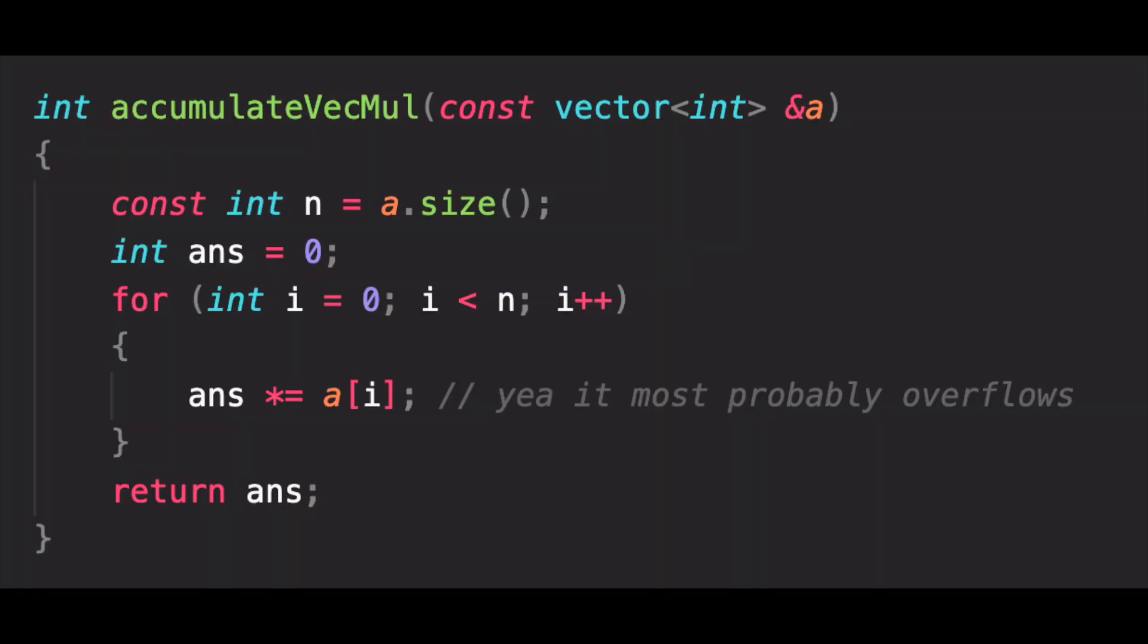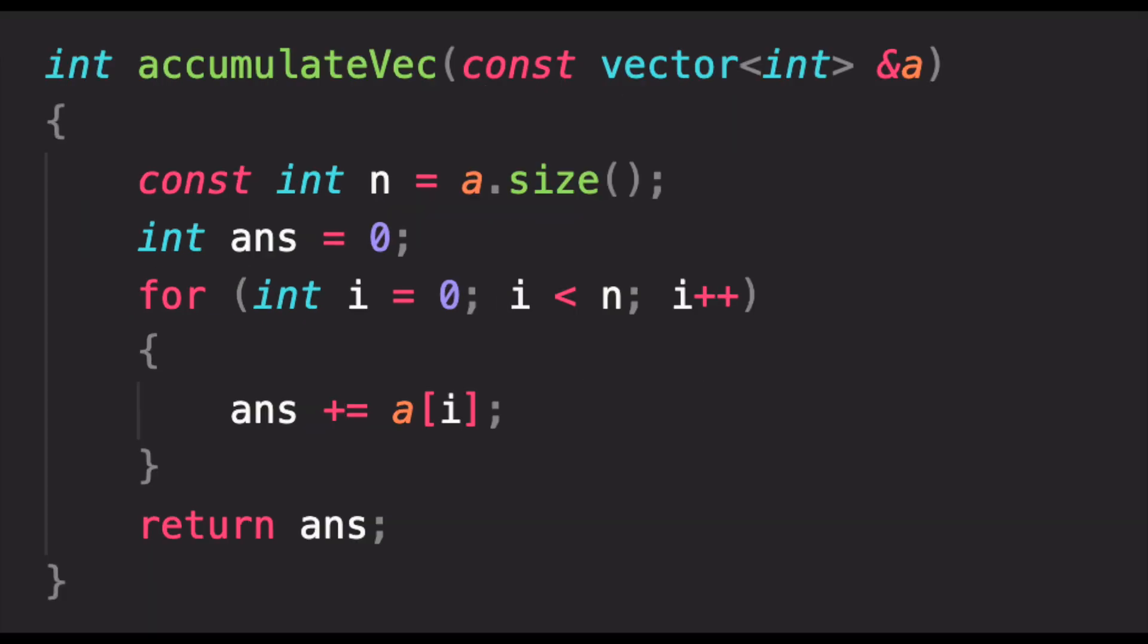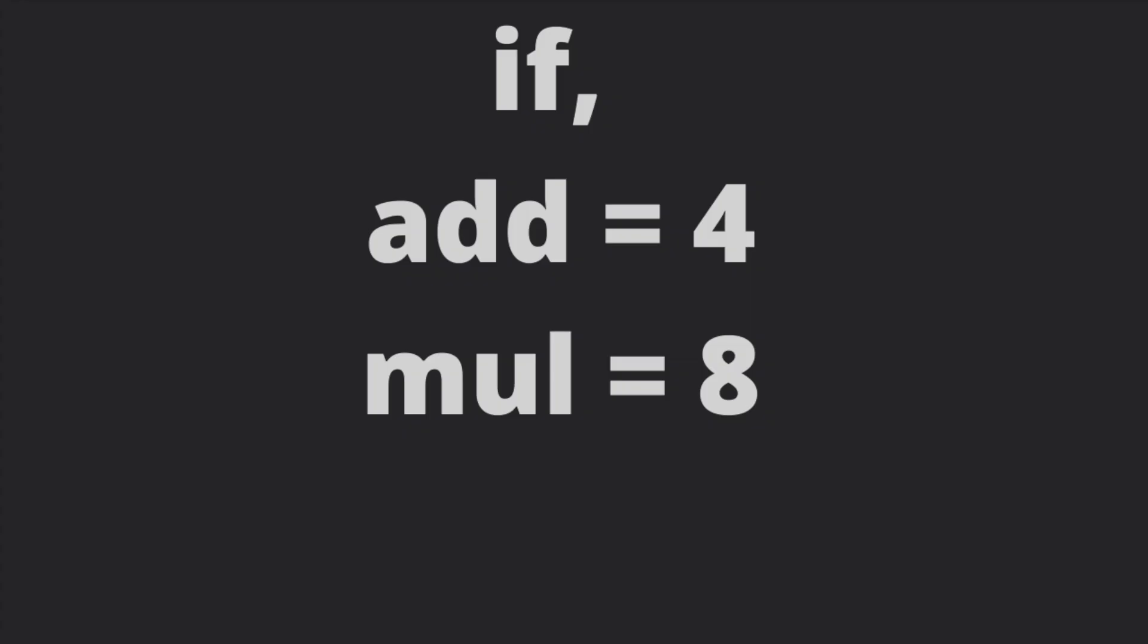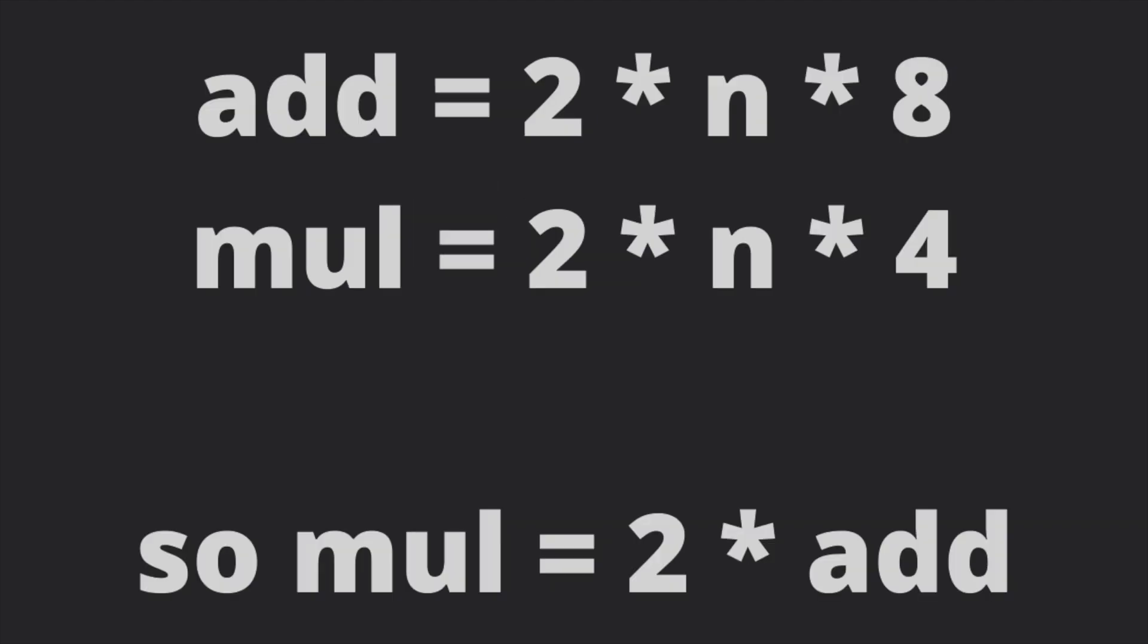However, in practice, this code is actually slower than our previous code. And the reason is that multiplication operation is slower than addition. Let's say addition takes 4 CPU cycles and multiplication takes 8 CPU cycles. Then, you can see that addition code will be approximately 2 times as fast as the multiplication one.